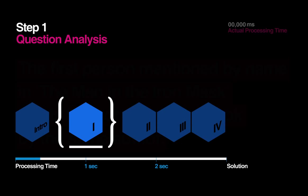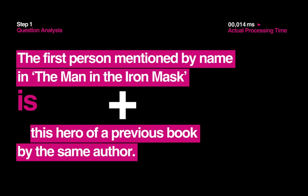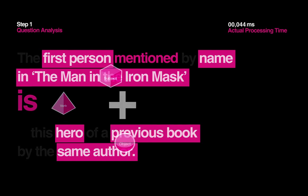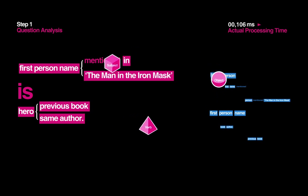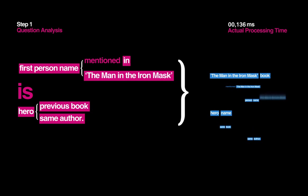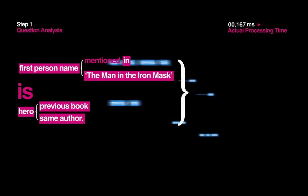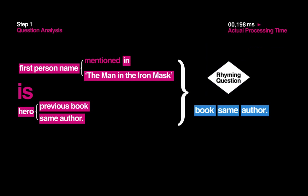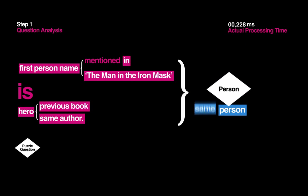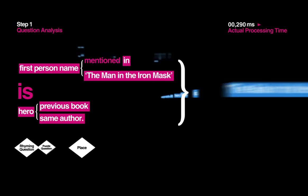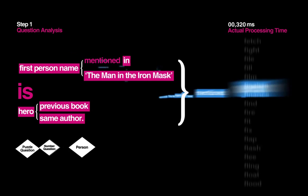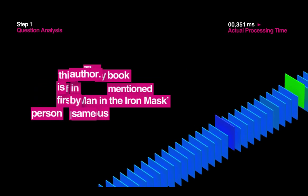Step 1: Question Analysis. The first thing Watson does is parse the question into its parts of speech and identify the different roles the words and phrases in the sentence are playing. This helps Watson determine two distinct things: what type of question is being asked, and what the question is asking for. During this early stage of the process, Watson doesn't know how to find the best answer yet, so it increases its chances by looking at many different options of what the question might be asking for.